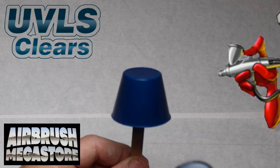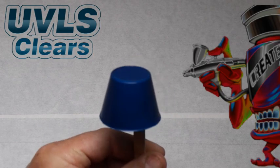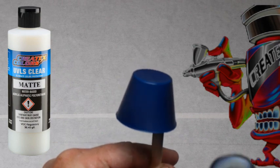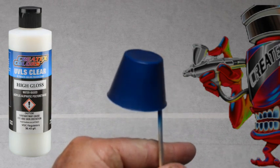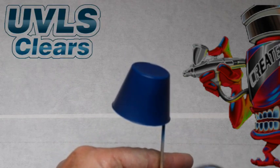This spray out is being cleared with Createx UVLS 4052 Matte, and then one half will be cleared with 4053 High Gloss to give you an idea of what the color looks like under two different gloss levels.